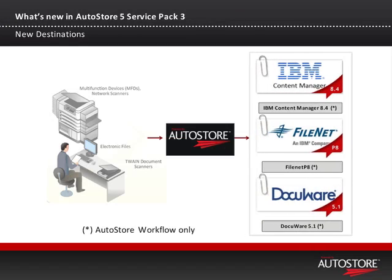The last thing to share through our journey on these new destinations is updated support to route to IBM Content Manager 8.4, FileNet P8 version 4 and version 4.5, and Docuware 5.1. All these route components were already available prior to Service Pack 3, and are available through the AutoStore update services for download and installation.